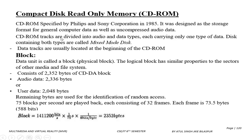CD-ROM tracks are divided into audio and data types. Audio and data types are divided separately, each carrying only one type of data. Disks containing both types are called mixed-mode disks.